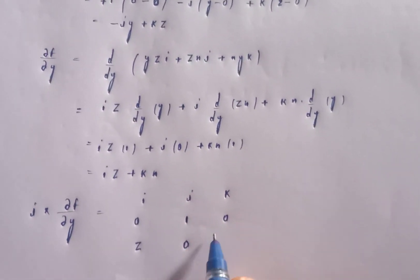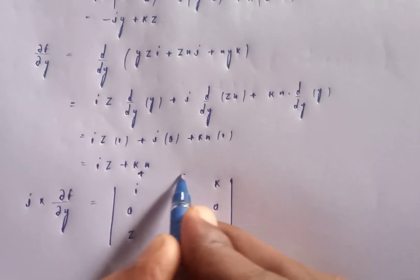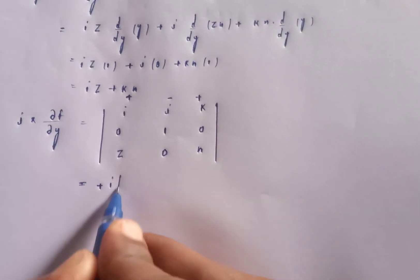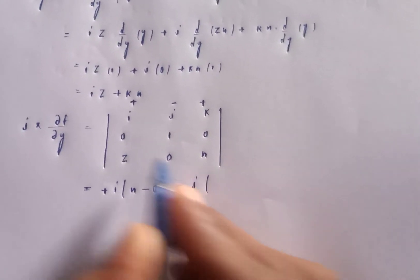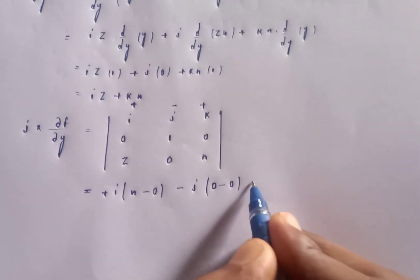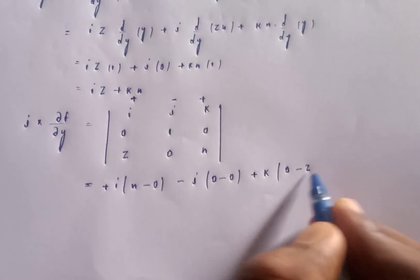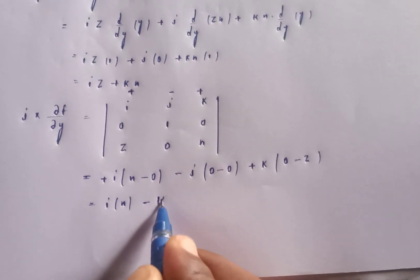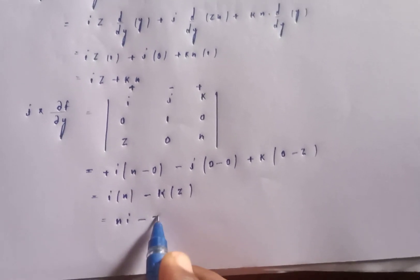Computing j cross ∂f/∂y: expanding the determinant gives i of x minus zero, minus j of zero minus zero, plus k of zero minus z. So j cross ∂f/∂y equals xi minus zk.